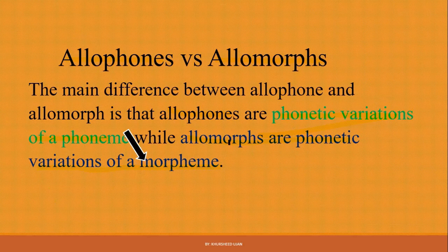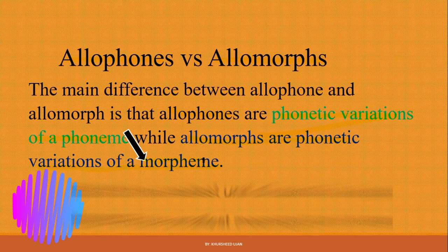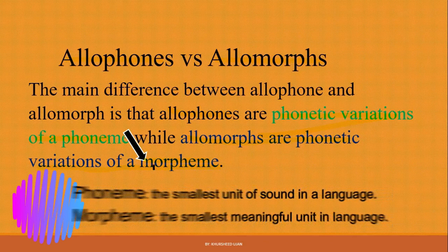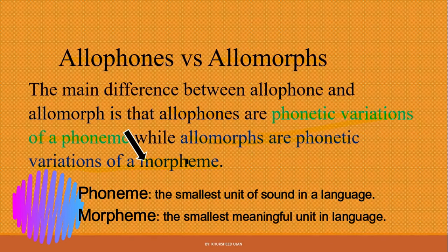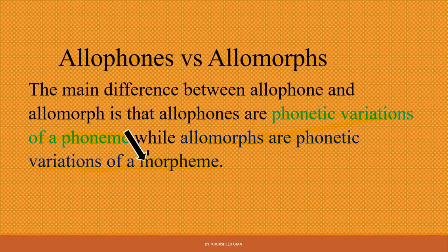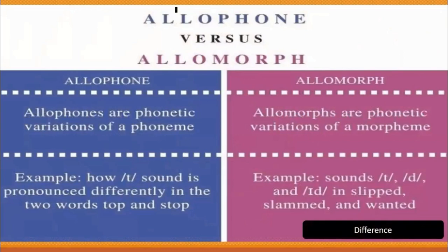Allophones are also a variation, and allomorphs are also a variation, but the distinction is between phoneme and morpheme. Morpheme is what varies in allomorphs, while the sound variation studied in phonology and phonetics is called an allophone. So: allophones are phonetic variations of phonemes, while allomorphs are phonetic variations of morphemes. That is the key difference.